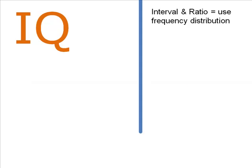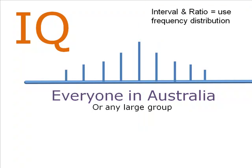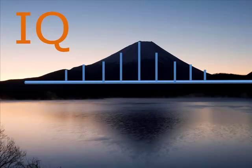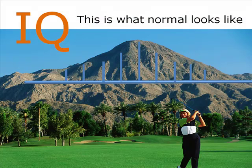If we tested everyone in Australia, we'd find that a lot of people have the same scores, but there's also quite a bit of variety. When we plot the data, we can see that the graph, called a frequency distribution, looks like a hill, mountain, or bell. This is the infamous normal curve, or normal bell-shaped curve.